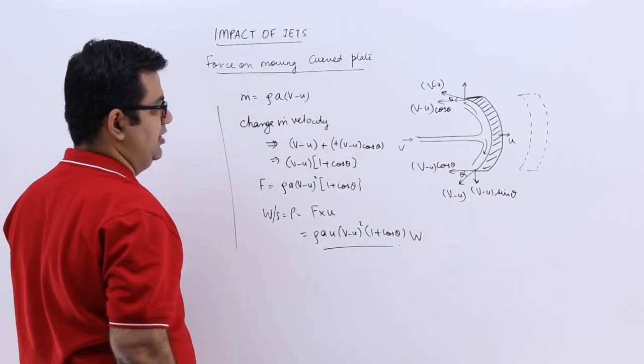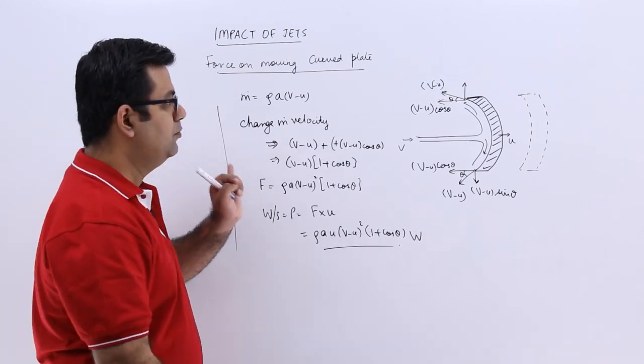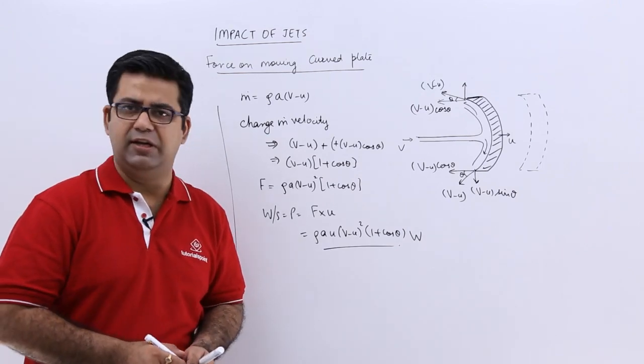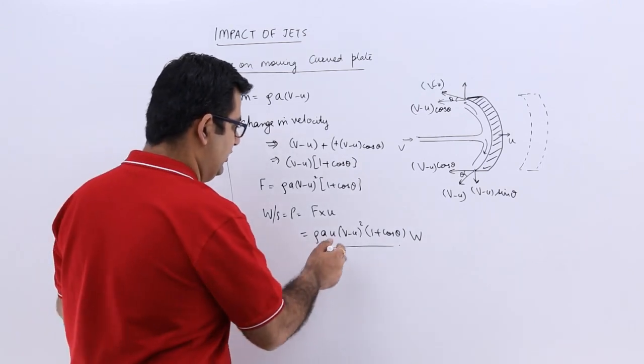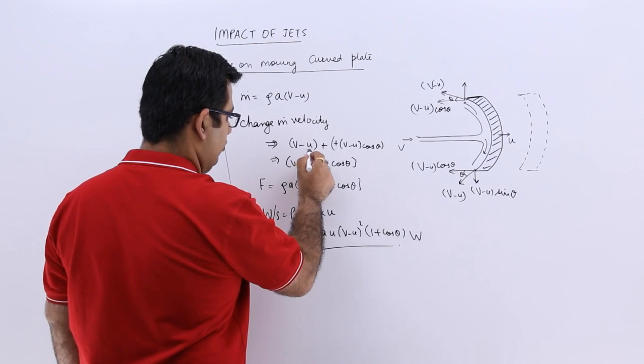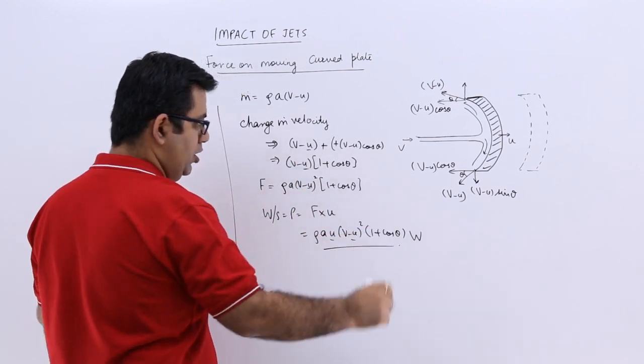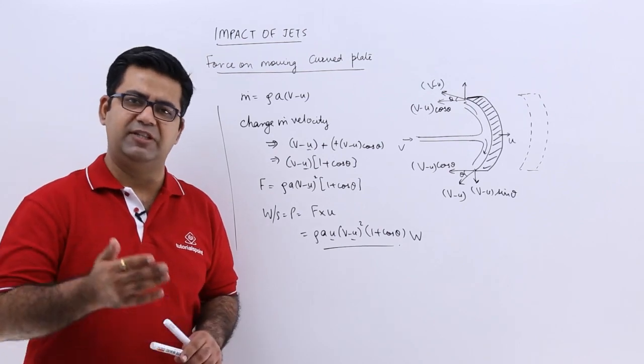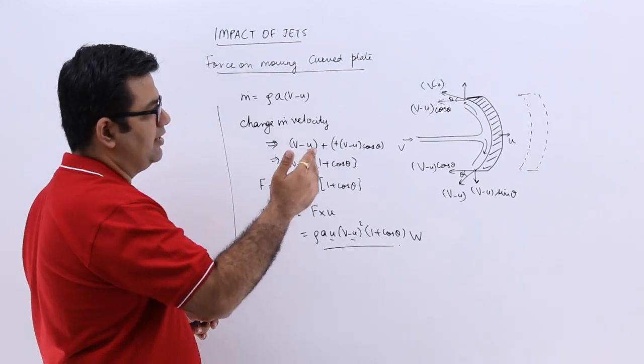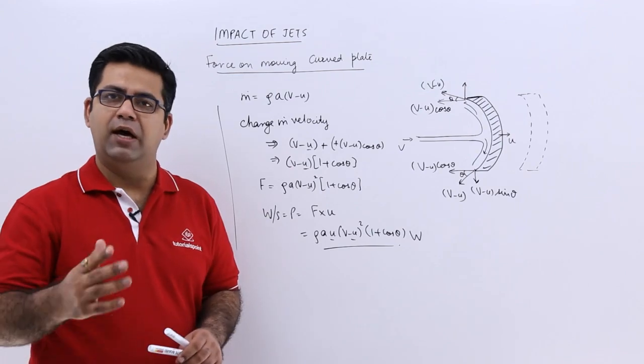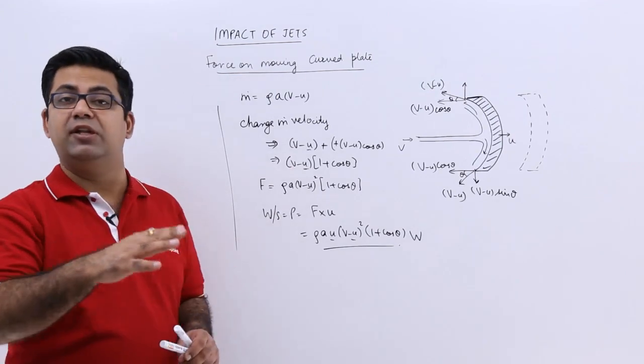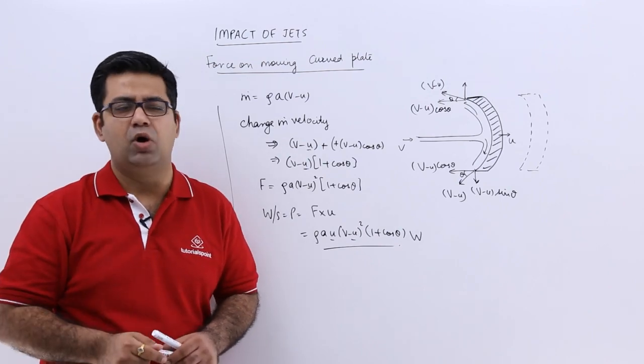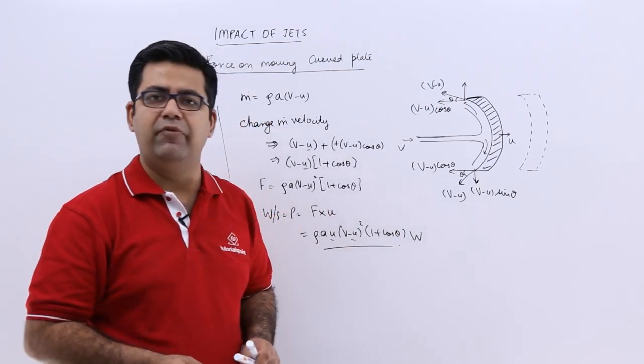So this is the case for a moving curved plate. This is very analogous to what you did in the stationary curved plate. Just you have this component coming in of u. So I hope you got these concepts of the flat plates and the curved plates. Now after the numericals on the flat plates which are moving, let's have a look at the numericals on curved plates which are moving in the direction of the jet.